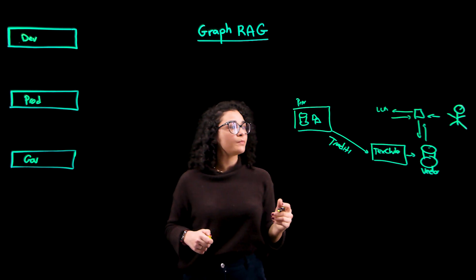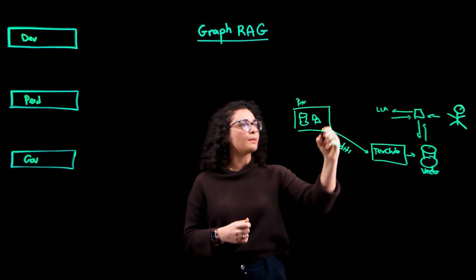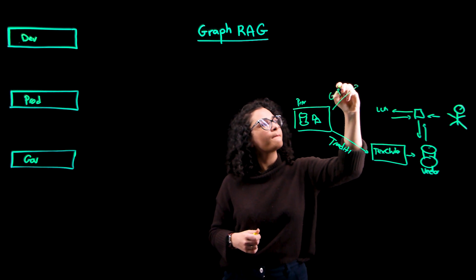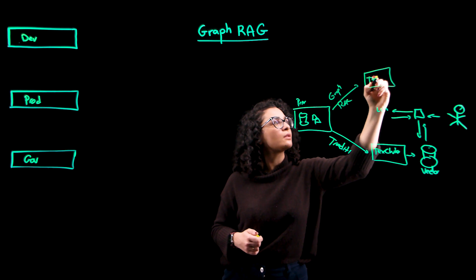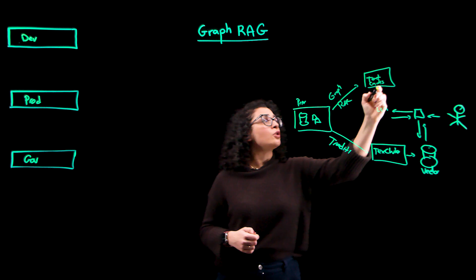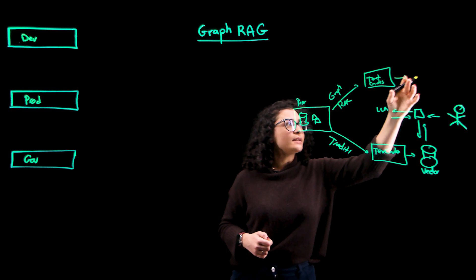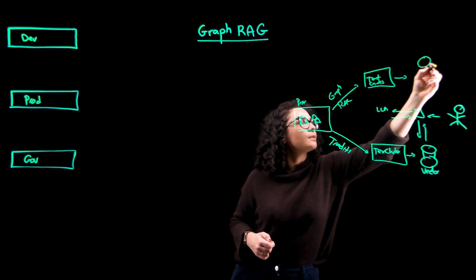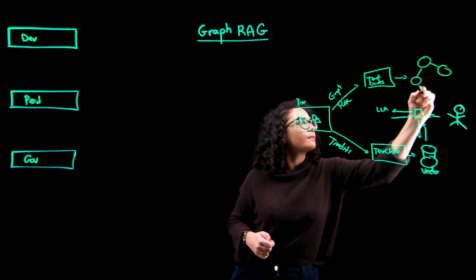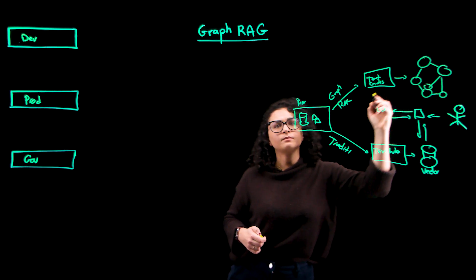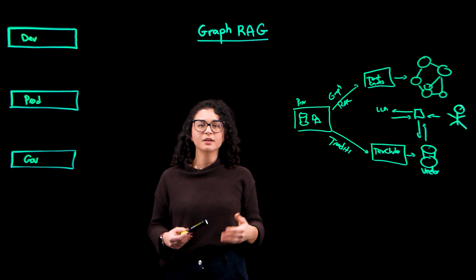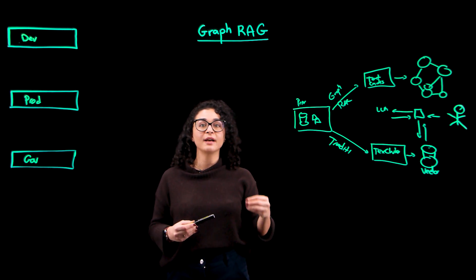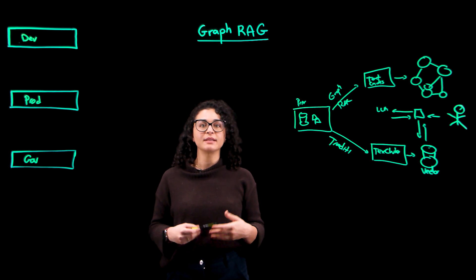We all know how traditional RAG works. Now, GraphRAG builds on top of that. We start off by leveraging those same text chunks, but on top of that, we're also extracting entities and more relevant information to be able to map out this information in a knowledge graph. This way, GraphRAG doesn't just retrieve isolated answers — it connects related information, which enhances the quality of responses with added accuracy and insight.